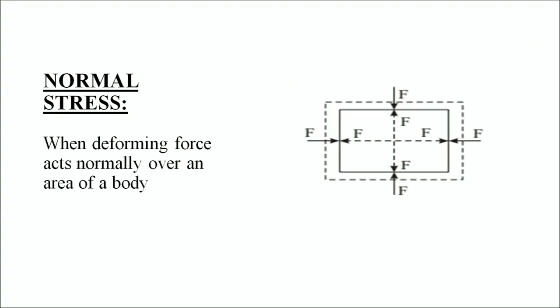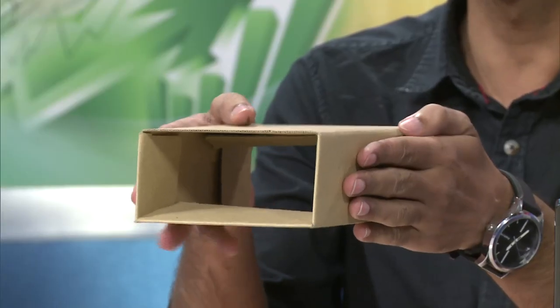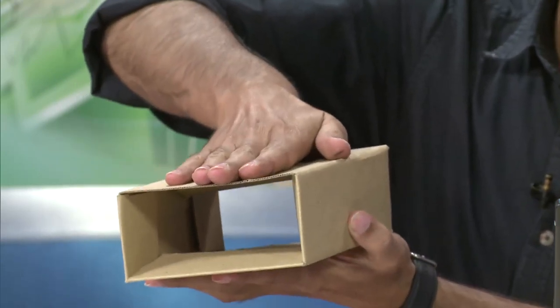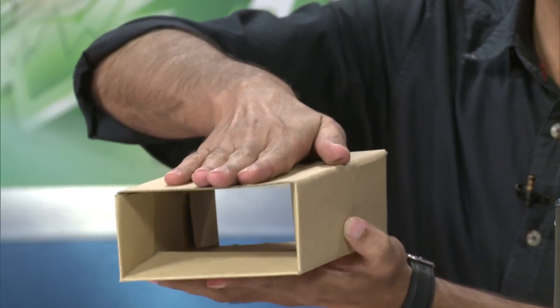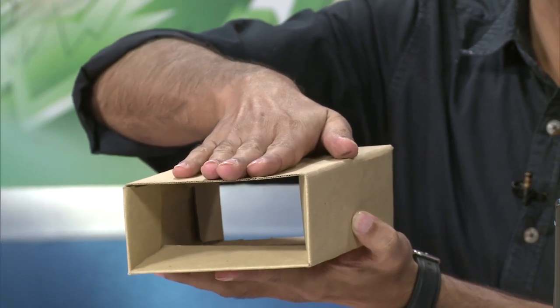Under the types of stress, the very first type is normal stress. The term 'normal' in physics means perpendicular to the surface. As you can see, this is a hollow cardboard, and if we apply a perpendicular force to the surface of this cardboard, that is what we call normal stress. When a deforming force acts normally over an area of a body, that is termed normal stress.